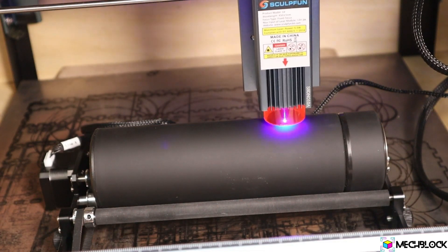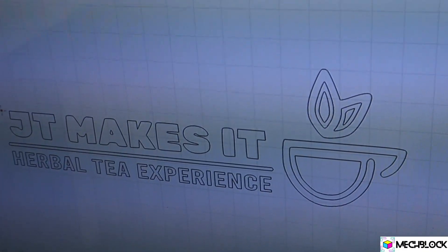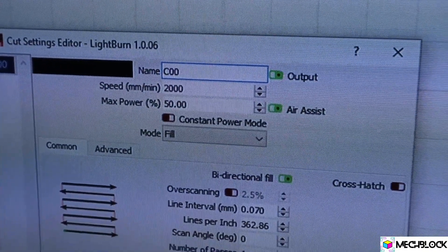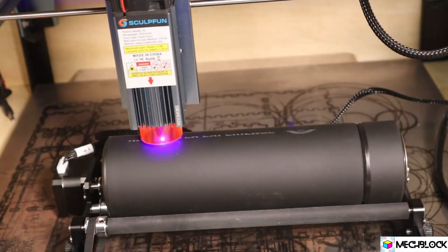You need to adjust the power just enough so that it removes the rubber but does not mark the stainless steel. I used a speed of 2000 mm per minute and 50% power. Fill step was set at 0.07 mm.